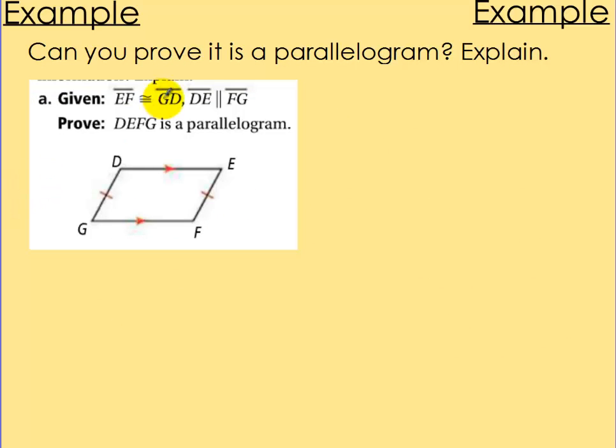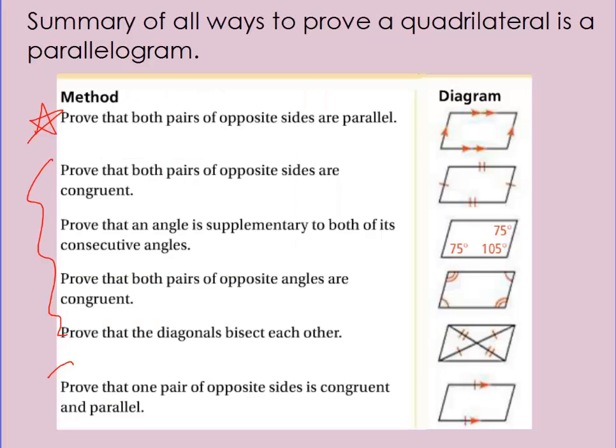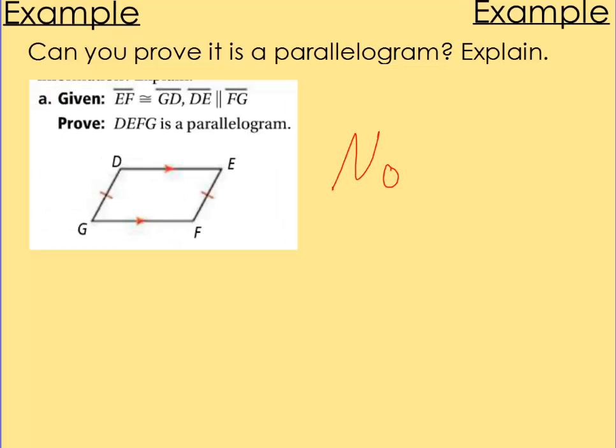Next one, pause the video. Alright, can you prove this is a parallelogram and explain it? So I have parallel sides, DE is parallel to FG and I have DG equals EF. Well, I only have one set of parallel sides, but I have different sides that are actually congruent. I don't have enough information to use any one of the six cases from this slide.